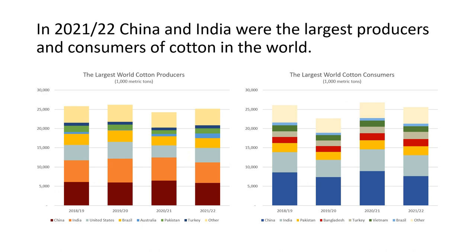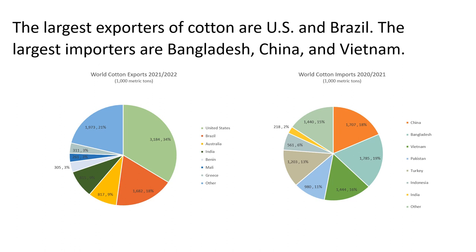During 2018–2022, global cotton production has been around 25 million metric tons. In 2021–22, seven countries produced 83 percent of the world's cotton: China, India, U.S., Brazil, Australia, Pakistan, and Turkey. During 2018 to 2022, China and India accounted for more than half of the world's cotton domestic use. The largest exporter of cotton is the United States at 34 percent, followed by Brazil at 18 percent. The largest importers are Bangladesh, China, Vietnam, Turkey, and Pakistan, comprising 76 percent.